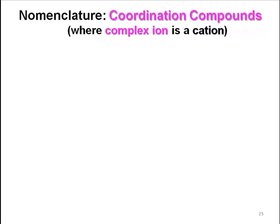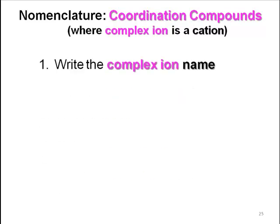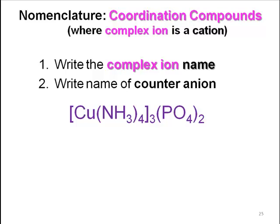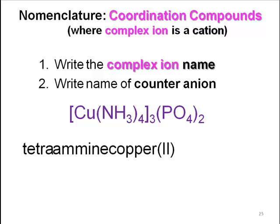The next class of coordination compounds is when the complex ion is a cation — when the complex ion has a positive charge, you write the complex ion name and then write the name of the counter-anion. In this case you've got tetra because you've got four of the — tetra-amines — copper-2, and then you include your phosphate name, which is your counter-anion.